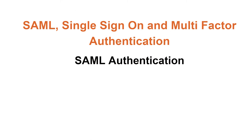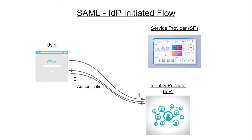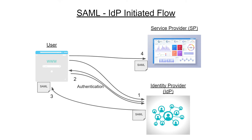Let's take a look at IDP initiated flow. In this flow, the user starts by accessing the identity provider and is prompted for authentication. Once this has been done, the user can request a service, and if the user is authorized, the IDP generates a SAML assertion. Using the user agent, the assertion is sent to the SP using a post message, as it's the user agent who acts as the transport mechanism for the assertion. The SP then verifies the assertion, maps it to a local user, and the session can start.